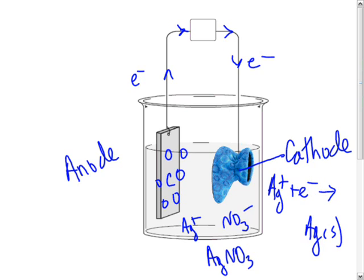This is very similar to our previous example in which we plated a child's booty with silver. In the first part, we had a silver anode and a booty here as the cathode that we plated.